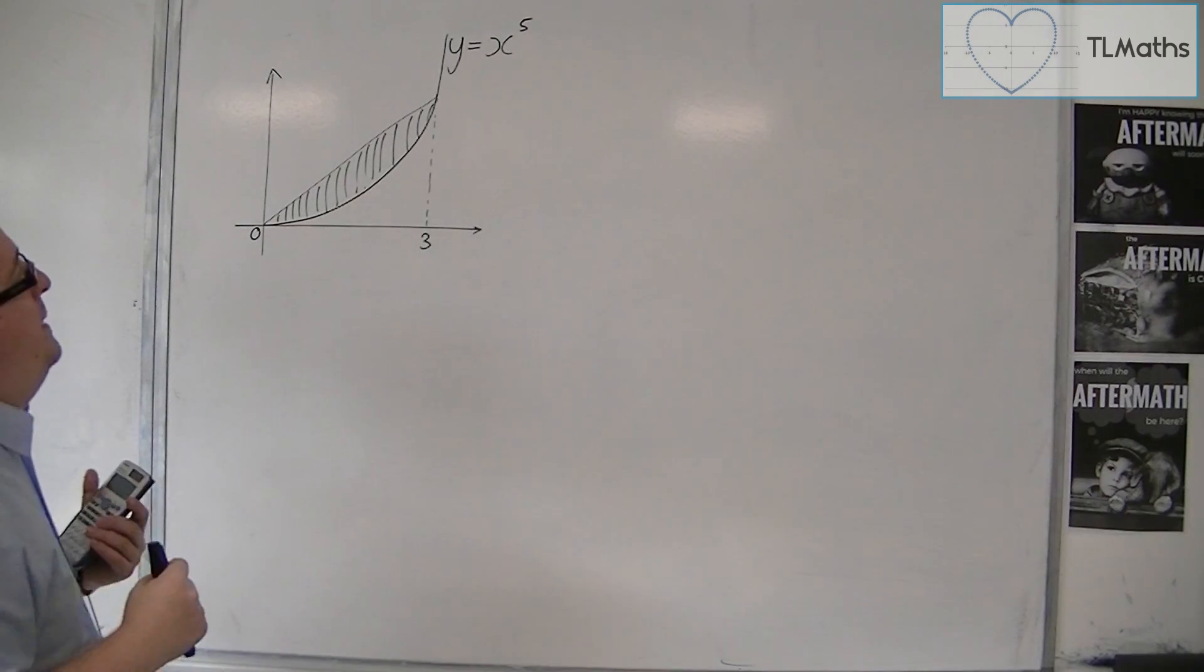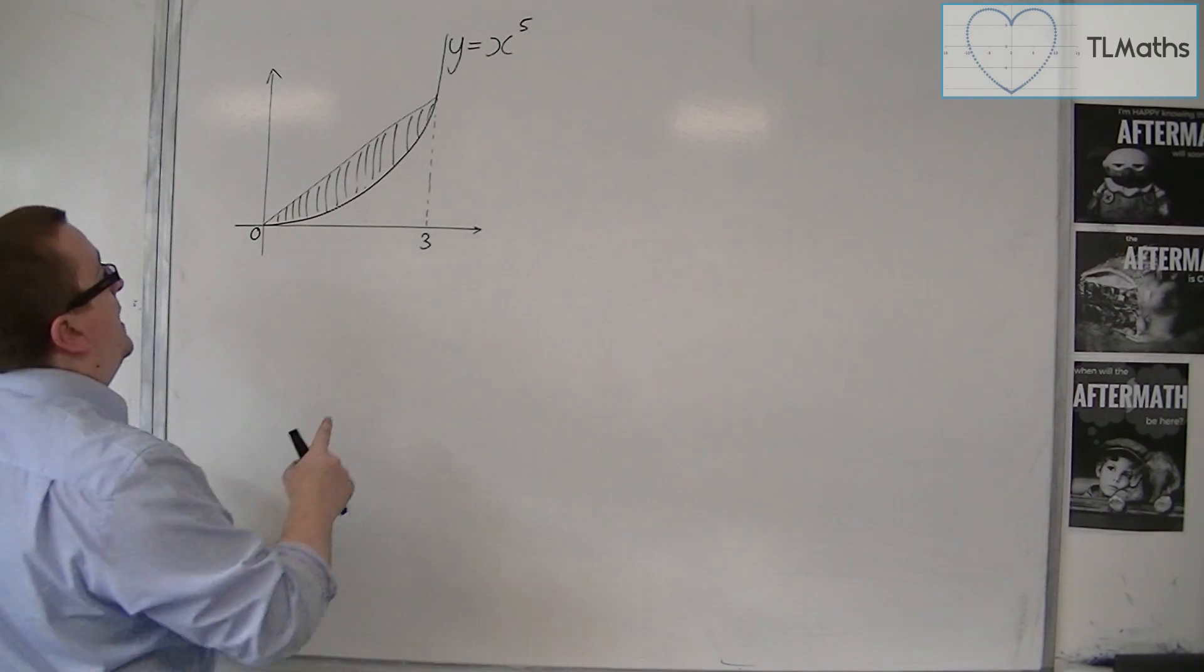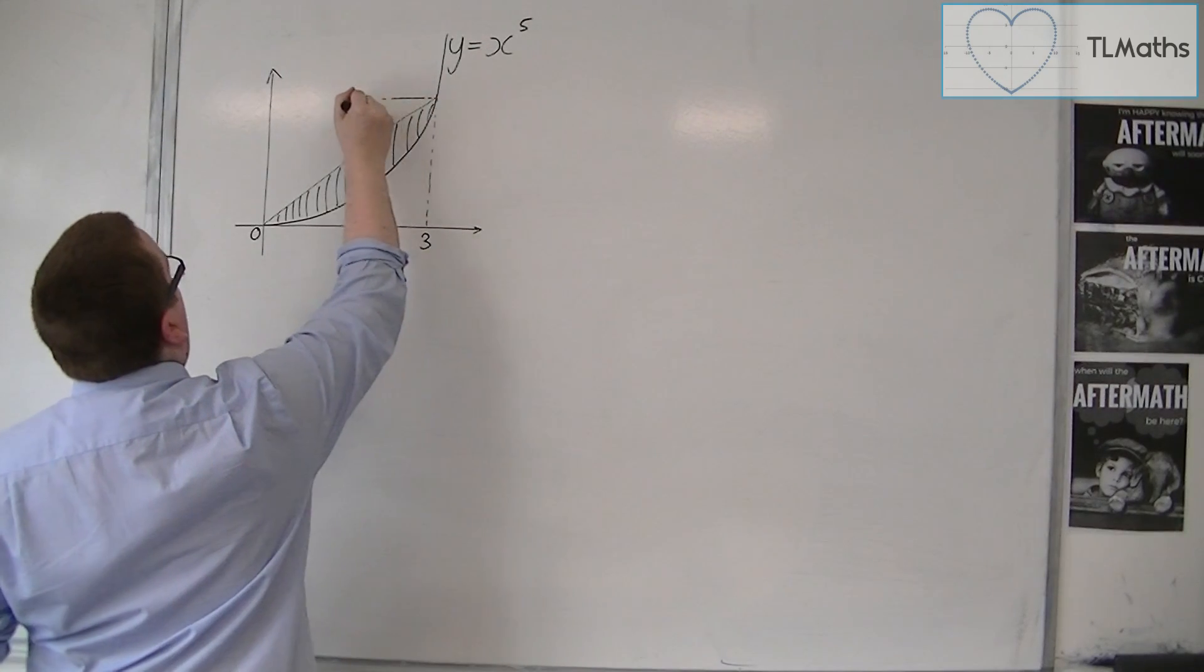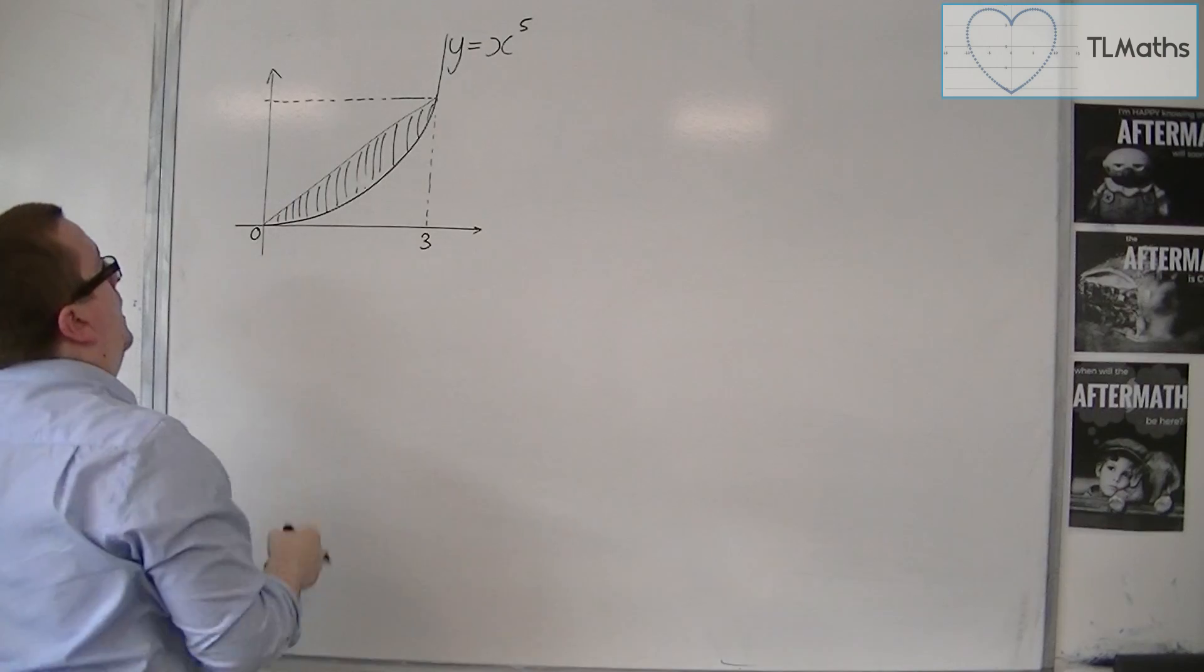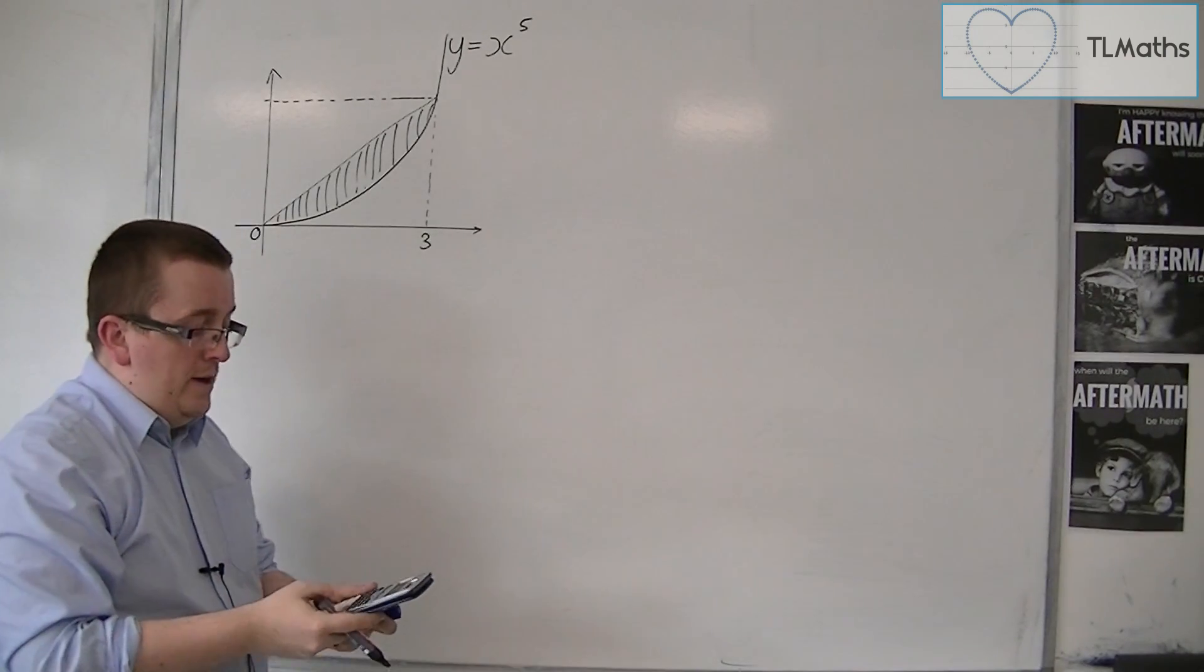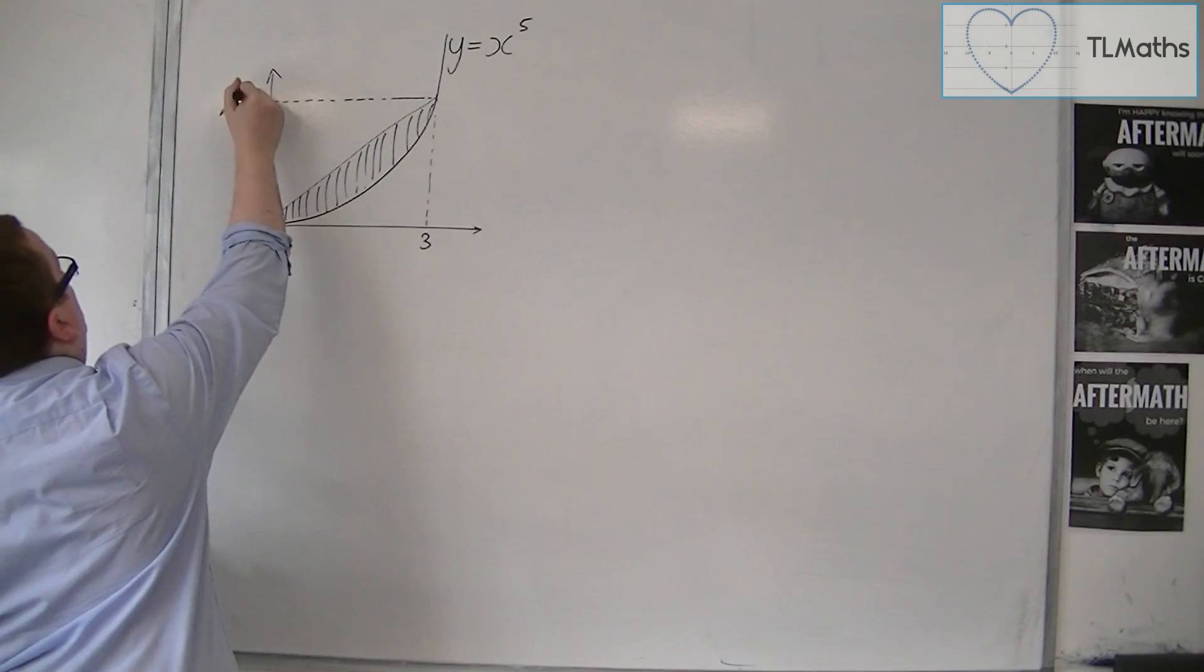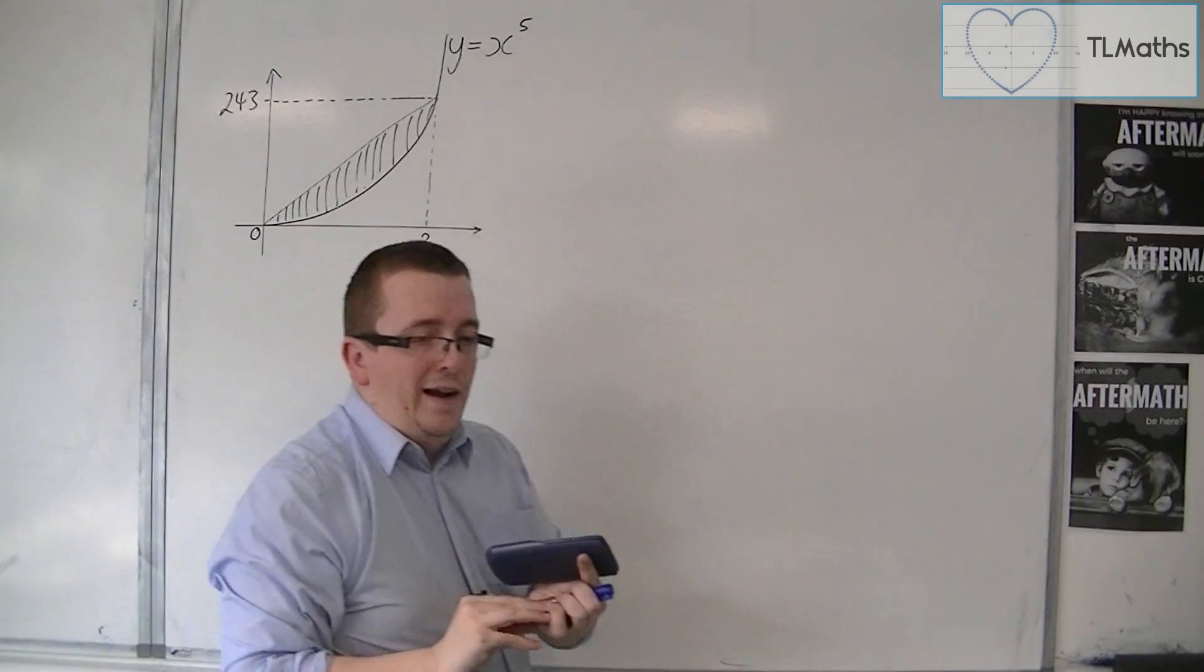So what would be most useful first of all is to work out what that y coordinate is. So we would substitute x equals 3 into y equals x to the 5. So 3 to the power of 5 is 243. So that gives me my y value.